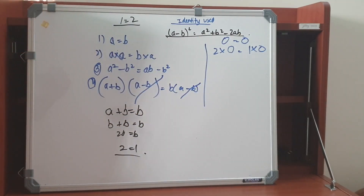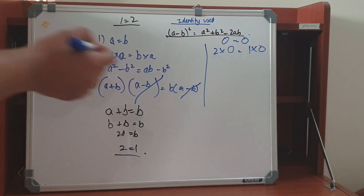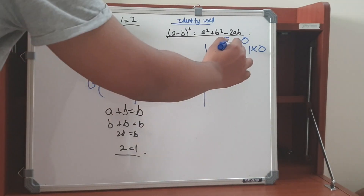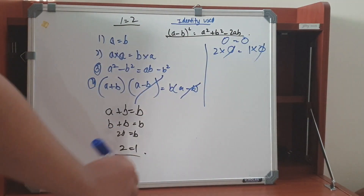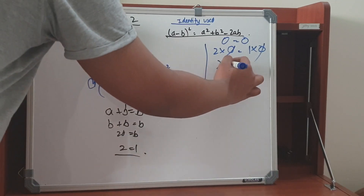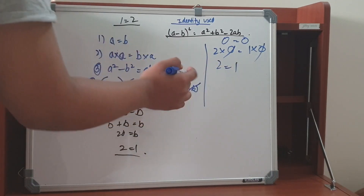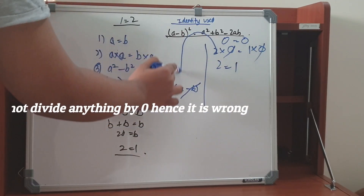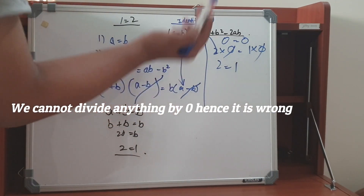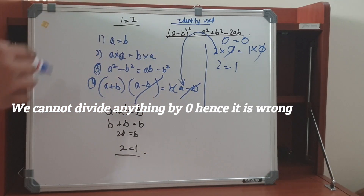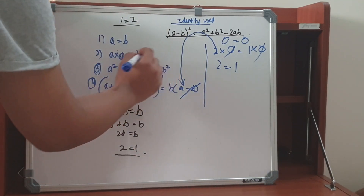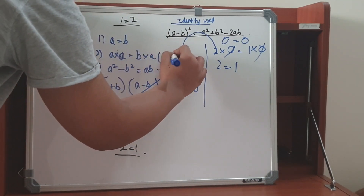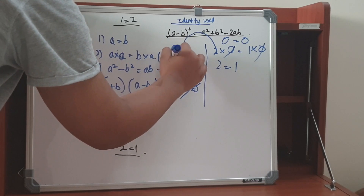They are both the same, but we can also cancel 0 from both sides and get 2 is equal to 1. This is what is done in this equation. How to correct it? If we mention here that a minus b is not equal to zero...